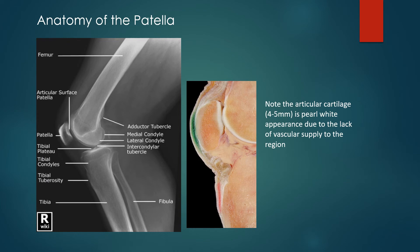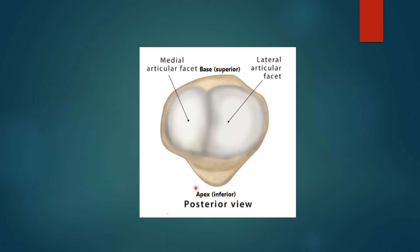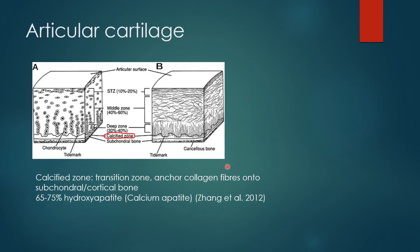Let's take a step back and look at the anatomy of a patella. What I found most interesting is the articular cartilage — the pearly white material on the cadaver. It's usually about four to five millimeters in thickness and appears white due to the avascular, or lack of blood supply, nature of this region. The apex or inferior border of the patella is actually a non-articulating point, meaning articular cartilage does not line this region. This is important because of the calcified zone at the bottom of the articular cartilage, which functions to anchor the deep zone of collagen fibers to the cortical or subchondral bone.